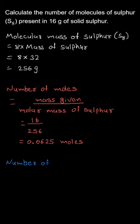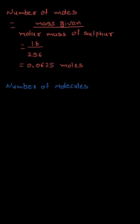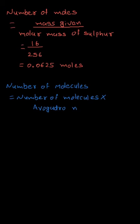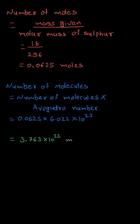Now, to calculate the number of molecules of solid sulfur of 16 grams, we need to multiply the number of moles which we got earlier, that is 0.0625, by Avogadro's number, which is 6.022 × 10²³. So I will multiply 0.0625 × 6.022 × 10²³. The final answer for the number of molecules will be 3.763 × 10²² molecules. This means that in 16 grams of solid sulfur, the number of molecules present will be 3.763 × 10²² molecules.